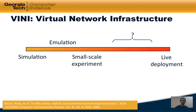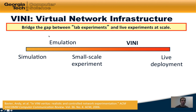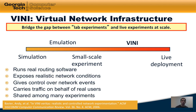That was the motivation behind VINI, the virtual network infrastructure. The idea was that on one hand we had controlled, repeatable lab experiments that were potentially not so realistic, and on the other hand we had live deployments which were very realistic, could scale up, run real traffic, but were not necessarily repeatable. Network virtualization could bridge the gap between repeatability and realism. VINI runs real routing software, exposes realistic network conditions to applications running on it, gives control to the experimenter over network events such as failures, can carry traffic on behalf of real users, and can be shared among many different experimenters.